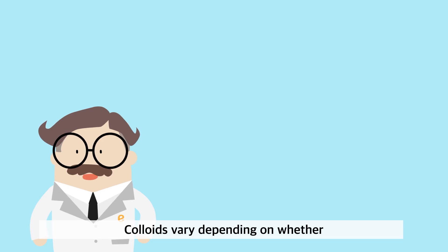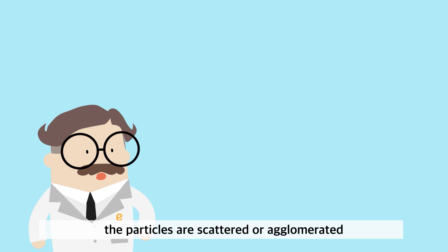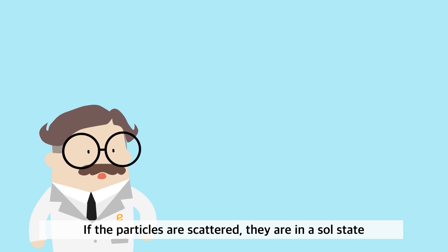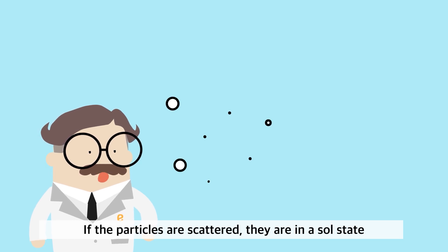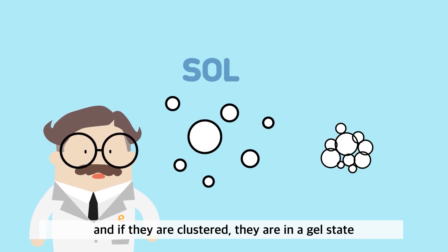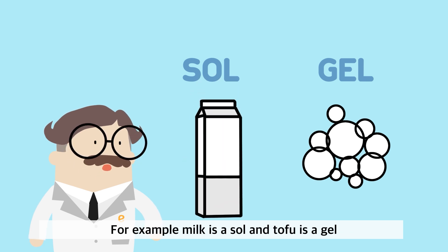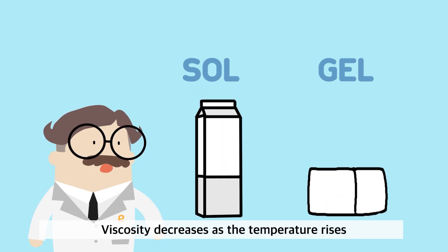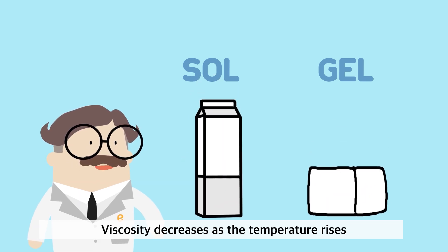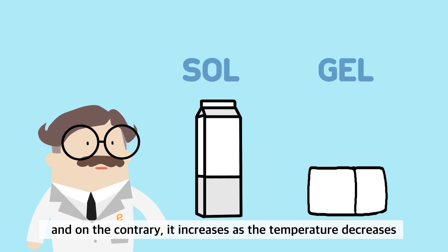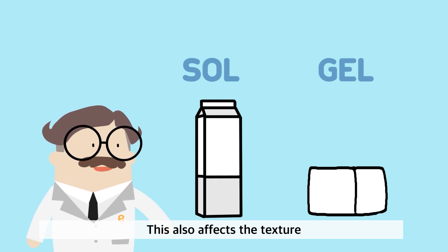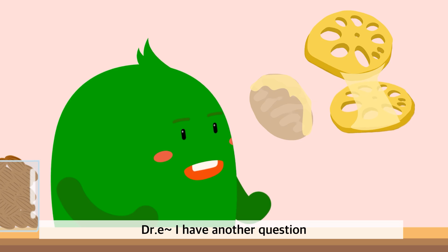Colloids vary depending on whether particles are scattered or agglomerated. If the particles are scattered, they are in a sol state, and if clustered, a gel state. For example, milk is a sol, and tofu is a gel. Viscosity decreases as temperature rises, and increases as temperature decreases. This also affects the texture, so you should be careful when cooking with starch or starch syrup.